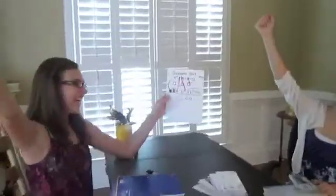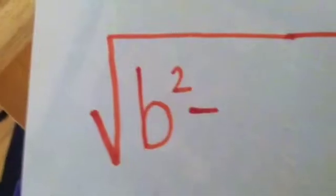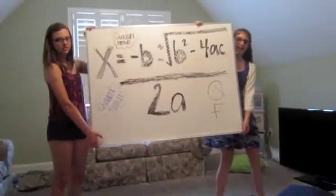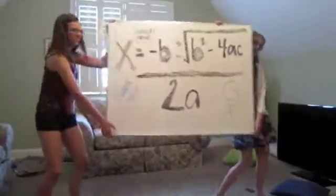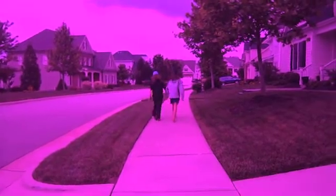x equals negative B, plus or minus the square root of B squared minus 4AC over 2A. 1, 2, 3. x equals negative B, plus or minus the square root of B squared minus 4AC over 2A. 1, 2, 3. Try your best and double check. You'll do great, you'll beat the rest. And when you get stuck, just come along to our handy parabola song.